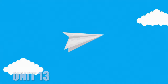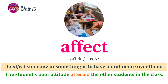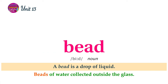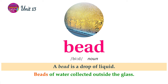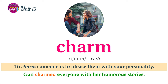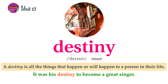Unit 13 Word List. To affect someone or something is to have an influence over them. The student's poor attitude affected the other students in the class. An autograph is the written name of a famous person. Everybody wanted the movie star's autograph. A bead is a drop of liquid. Beads of water collected outside the class. To brew coffee or tea means to pour hot water over it. Please brew a fresh pot of coffee. To charm someone is to please them with your personality. Gail charmed everyone with her humorous stories. A destiny is all the things that happen or will happen to a person in their life. It was his destiny to become a great singer.